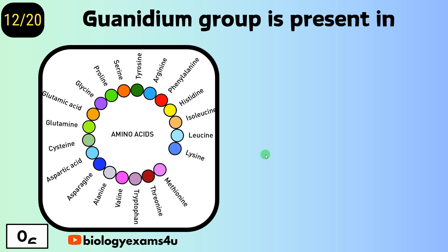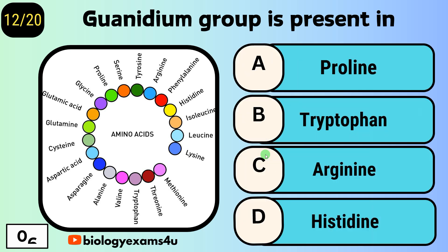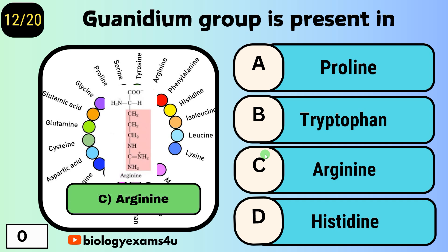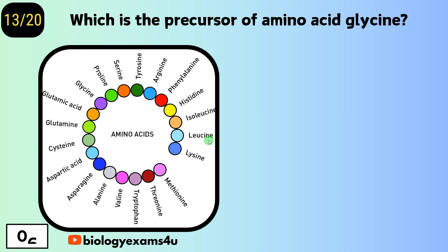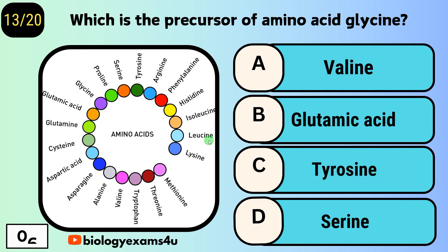Question number twelve: the guanidium group is present in — option A, proline; option B, tryptophan; option C, arginine; option D, histidine. The answer is arginine.